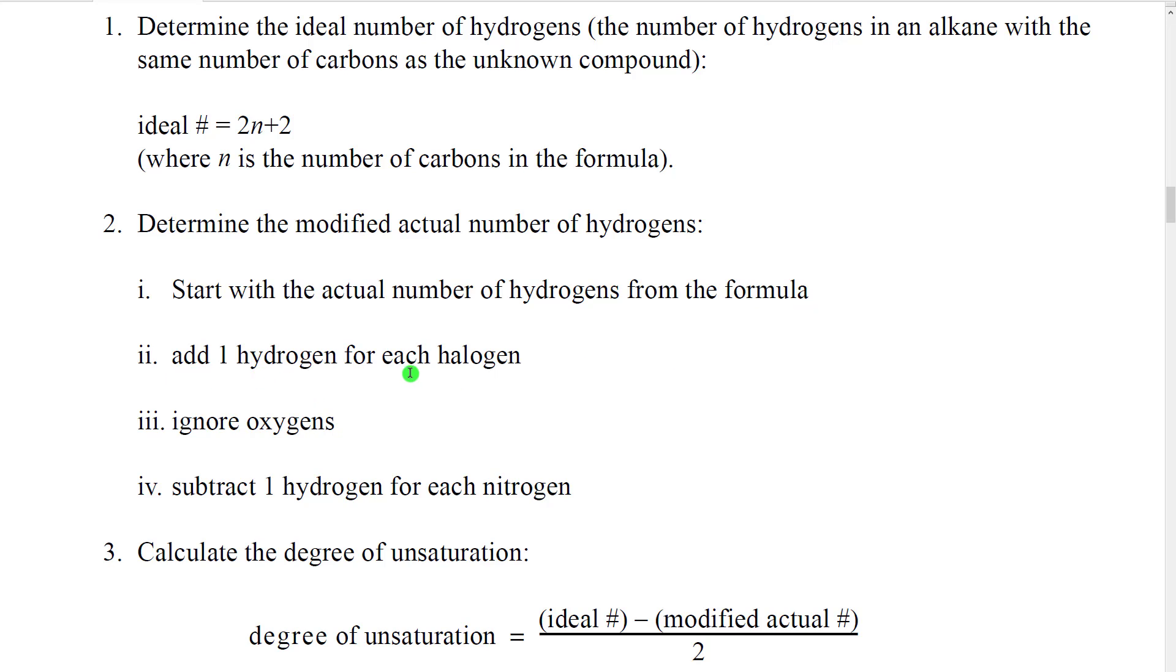We're then going to add one hydrogen for each halogen in the formula. The reason for this is that to put a halogen into a molecule, we have to make room by removing a hydrogen and replacing it with a halogen. But that doesn't actually create any double bonds. So the number of hydrogens is lowered without actually causing double bonds to appear. So we're going to add that in so that we get an accurate comparison.